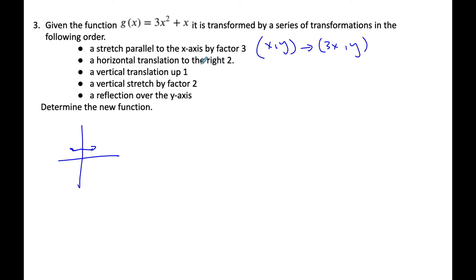A horizontal translation to the right 2 means my x, y will change to x plus 2, y. Then I change to a vertical translation. So my vertical translation means my x, y, my x stays the same,